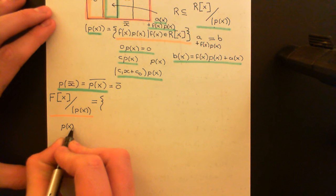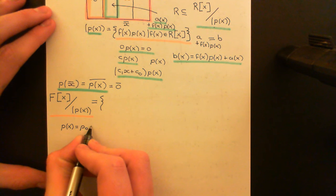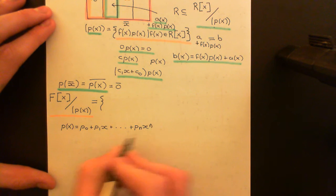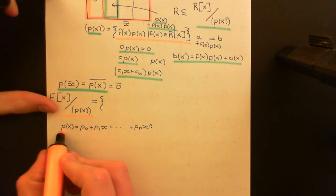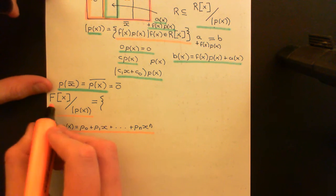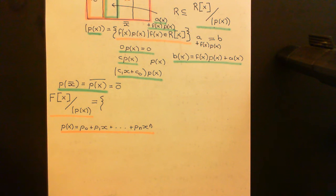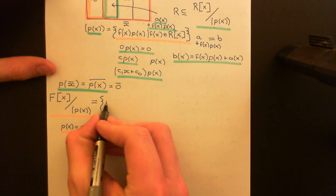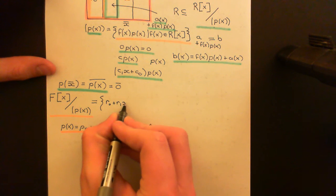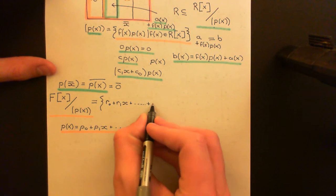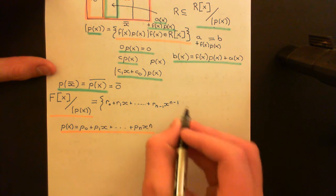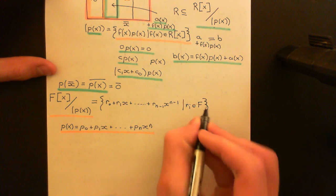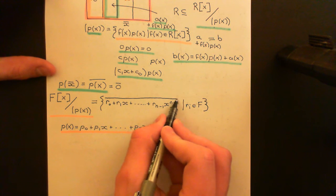So let's say we have some polynomial P of X, written explicitly as P₀ plus P₁X plus all the way up to Pₙ X to the N, so the degree of P of X is N. My claim is that the quotient set is going to look like all polynomials of the form R₀ plus R₁X plus all the way up to Rₙ₋₁ X to the N minus 1, where the Rᵢ's are elements of the field F. These polynomials will be the representatives of each coset.